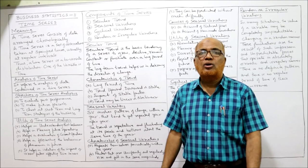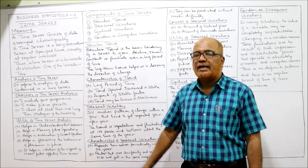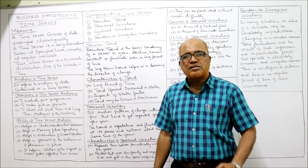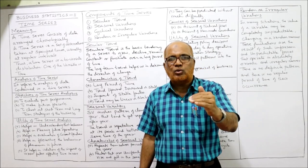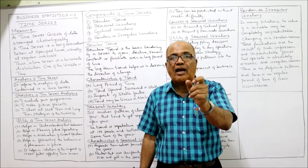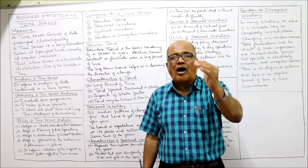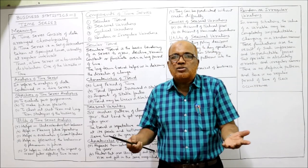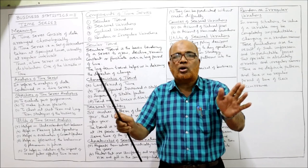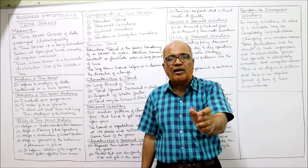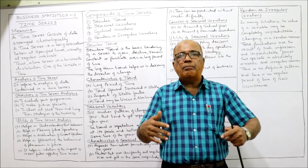A time series is a set of observations taken at specified times, usually at regular intervals. The time period should be regular — we take 2010, then 2011, 2012, every year with regular intervals. We are not skipping in between; for example, after 2010 taking 2012, then after 2012 taking 2015 — that means it is not a time series, because the recording is irregular. In a time series, the data should be recorded at regular periods of time.